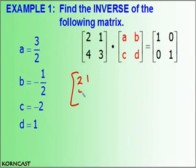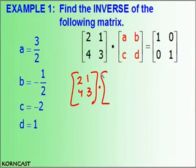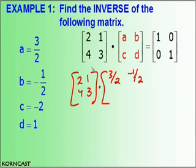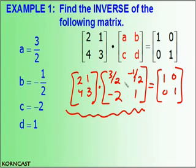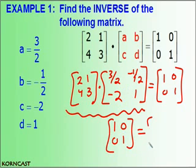So I have my original matrix — 2, 1, 4, 3 — multiplied by my new inverse matrix. A is 3 halves, b is negative 1 half, c is negative 2, and d is 1. So now that matrix, if I did all my math correctly, should equal the identity matrix when multiplied out. That matrix times my new matrix — which I call the inverse — should give me a true statement. And that's the point of today's lesson: to find this inverse matrix.